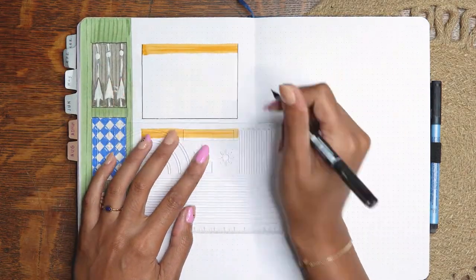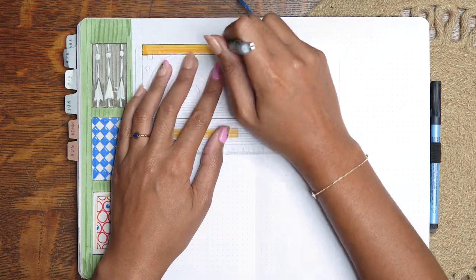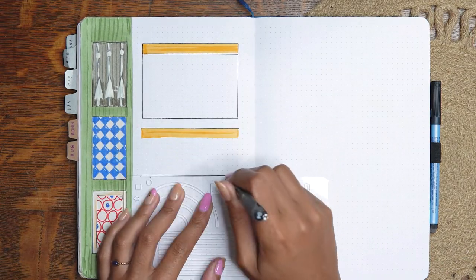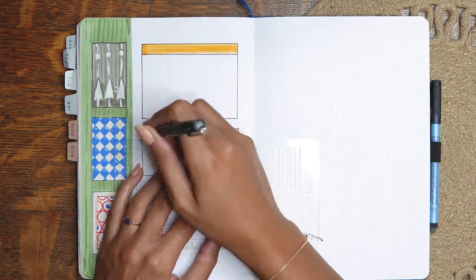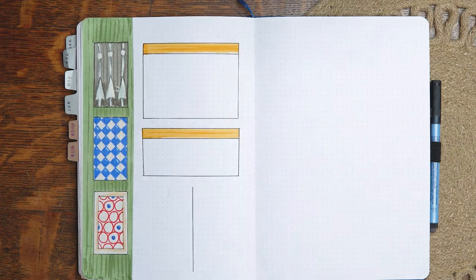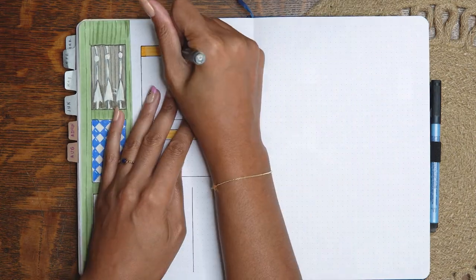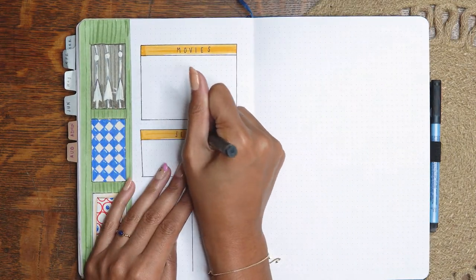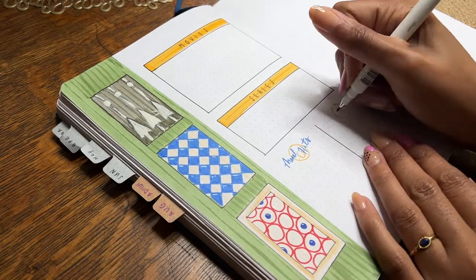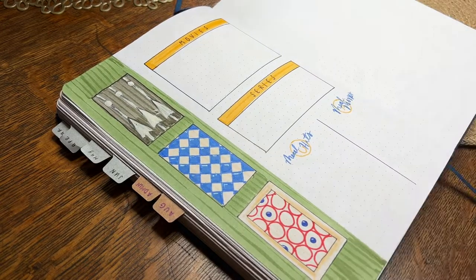But yeah, you saw that I pulled out some gouache earlier, shocker. But that ended up just being the best move to do that white on top of that dark olive Tombow. So yeah, here we go. The top area is for movies, under that TV series, and then you have the meal hits and meal misses down below.